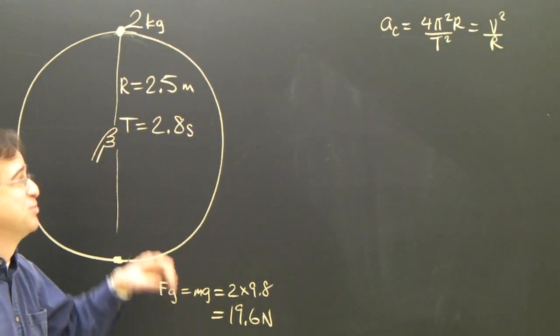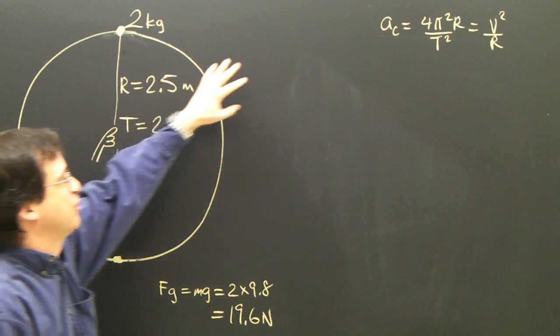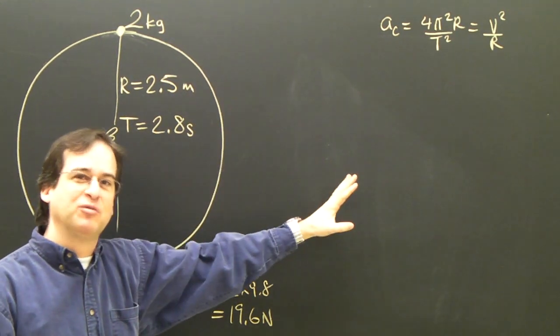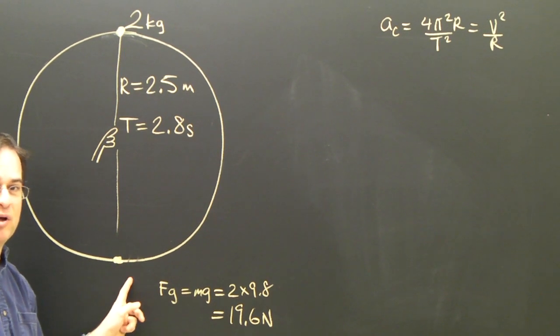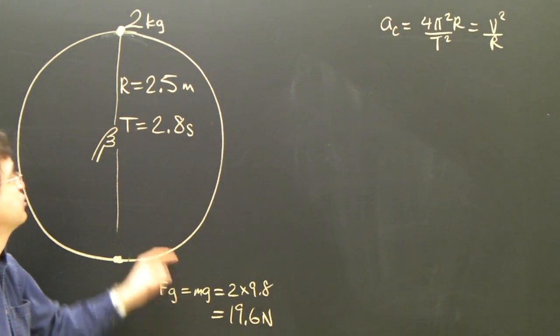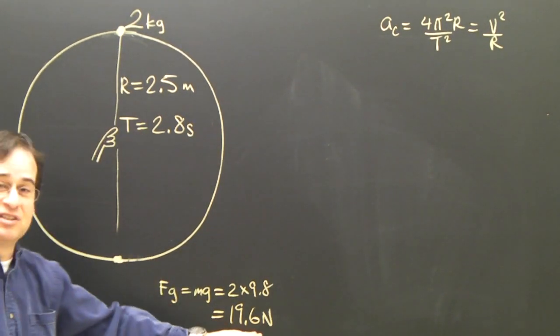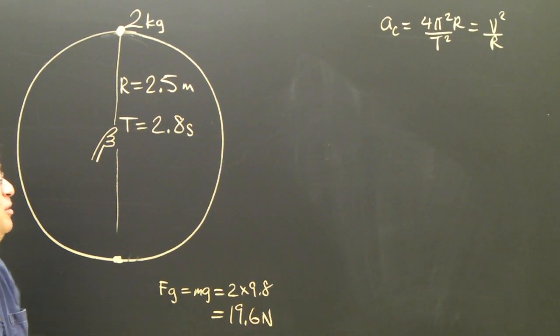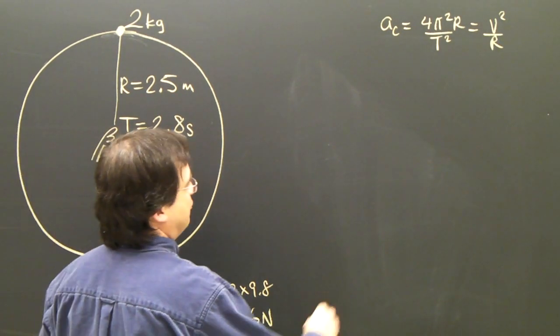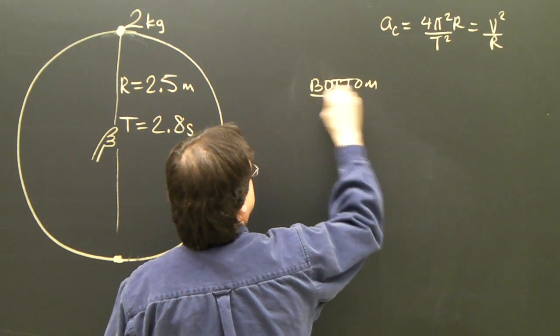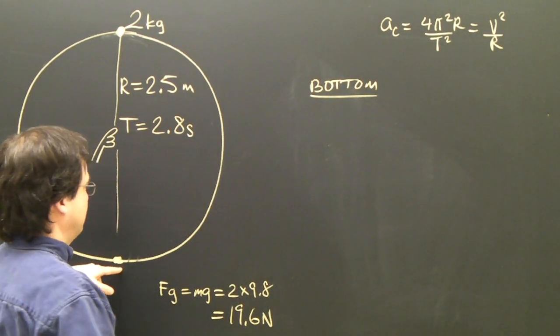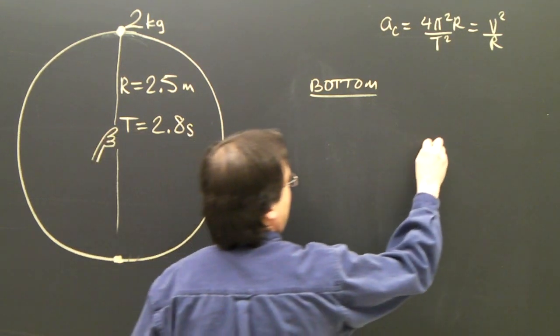Okay, in the last video what we did was we solved for the tension at the top by drawing a free body diagram using f net equals ma and solved for the tension. This time we're going to find the tension at the bottom. I've already calculated the force of gravity on a 2 kilogram object, it's 19.6 newtons, so I'll leave that there because I'm going to need it. Okay, so let's draw the free body diagram at the bottom. I've got gravity.